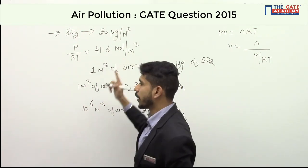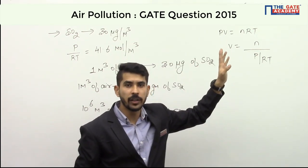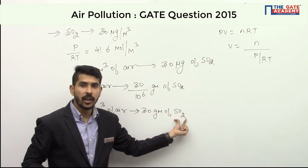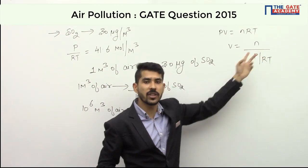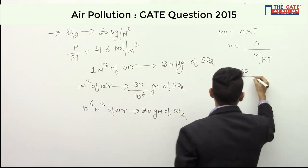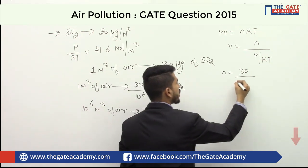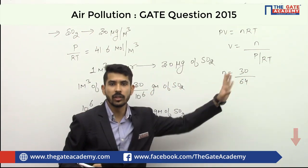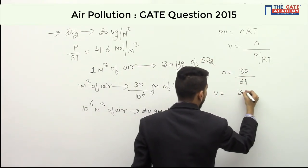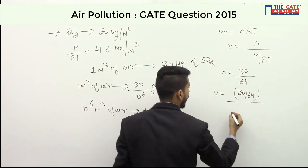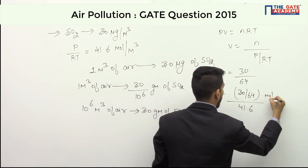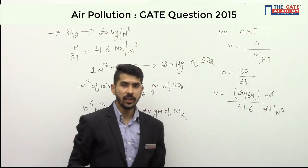P/RT is given as 41.6 moles per meter cube. Now n is in moles — we have 30 grams of sulfur dioxide, so n equals the given weight of 30 grams divided by the molecular weight of SO₂ which is 64. Substituting, volume equals (30/64) divided by 41.6. The units are moles divided by moles per meter cube, so moles cancel.